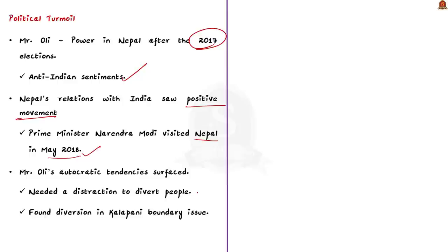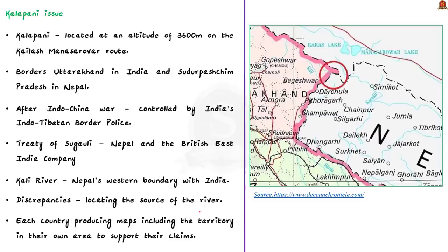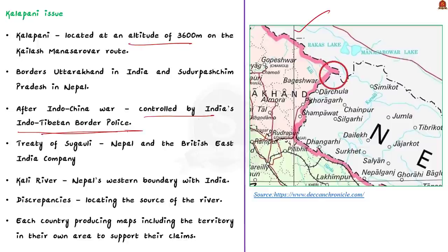Nepal's political scenario was undergoing turmoil. Mr. Oli needed a distraction to divert people from Nepal's local political issues, and he found it in the Kalapani boundary issue. Kalapani is located at an altitude of 3,600 meters on the Kailash Mansarovar range. It borders Uttarakhand in India and Sudur Pascham Pradesh in Nepal. Since the Indo-China War of 1962, Kalapani had been controlled by India's Indo-Tibetan Border Police.